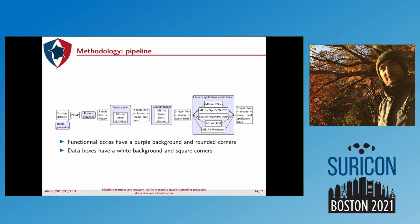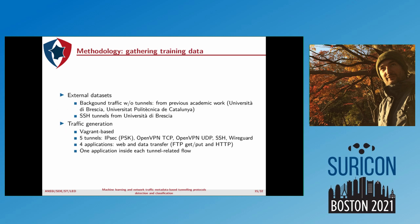We gathered external datasets for two types of traffic: first, background traffic without any tunnel, from the University of Brescia and a university in Catalonia; and we also obtained SSH tunnels from the University of Brescia. We also generated traffic using a Vagrant-based architecture with five different tunnels: IPsec, OpenVPN with TCP and UDP, SSH, and WireGuard. Inside these tunnels, we use four applications: web browsing, data transfer via FTP-GET, and HTTP-GET on Debian packages. We use only one application inside each tunnel at a time.